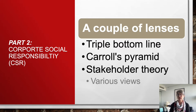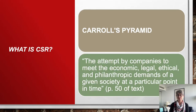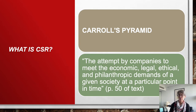We're going to be moving on to another lens of CSR: Carroll's Pyramid. Then we'll also be talking about stakeholder theory. Let's have a quick look at Carroll's Pyramid - I strongly encourage you to delve into this more through your own research and the textbook and resources we supply. A broad definition from our textbook is: the attempt by companies to meet the economic, legal, ethical, and philanthropic demands of a given society at a particular point in time.